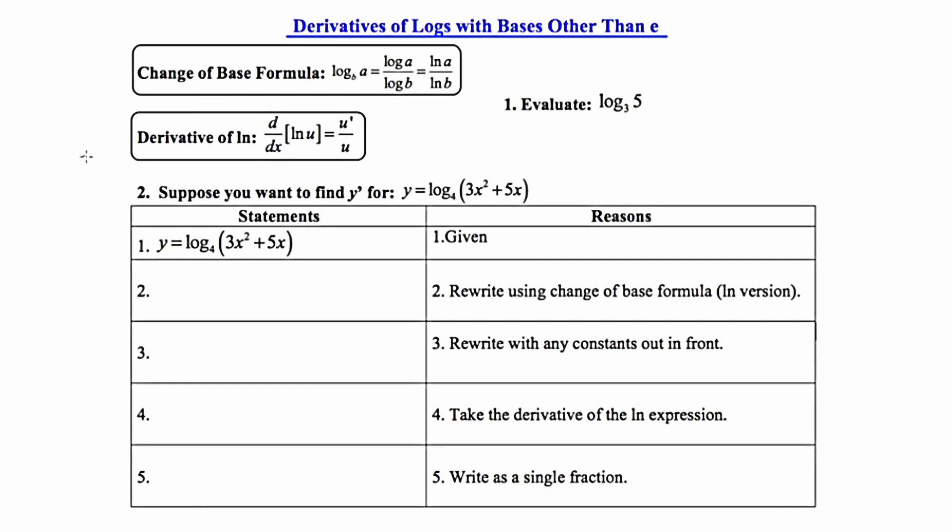So to start, I just want to remind you of our previous lesson, which was taking the derivatives of natural logs. That formula was to take the argument, place it in the denominator, and then place its derivative in the numerator. So if you're taking the derivative of the natural log of u, you end up getting u prime over u.